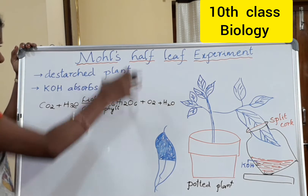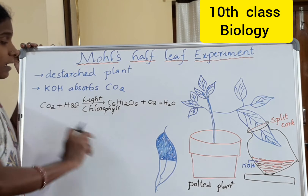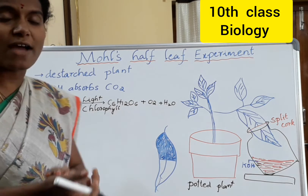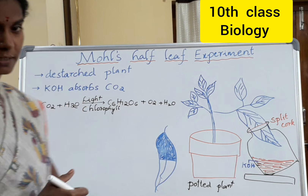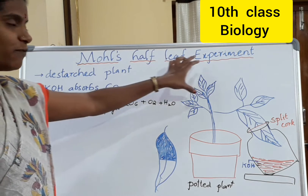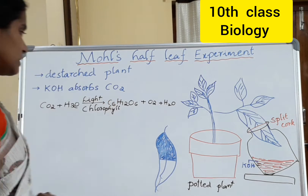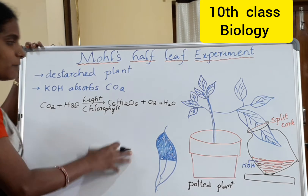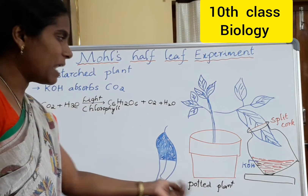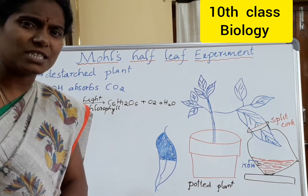In this experiment, with the help of the half leaf experiment, we will prove that CO2 is one of the important factors for photosynthesis. So, this is the potted plant. We should first de-starch this plant.